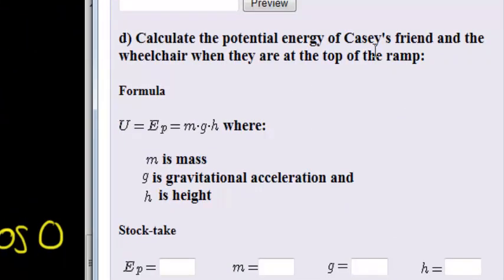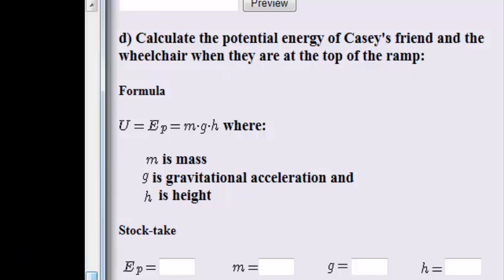Let's answer the last question. Calculate the potential energy of Casey's friend and the wheelchair when they are at the top of the ramp. So we've not done potential energy before, but that's okay, they give us the formula here. They say potential energy is U or EP and the formula is simply mass times gravity times height.